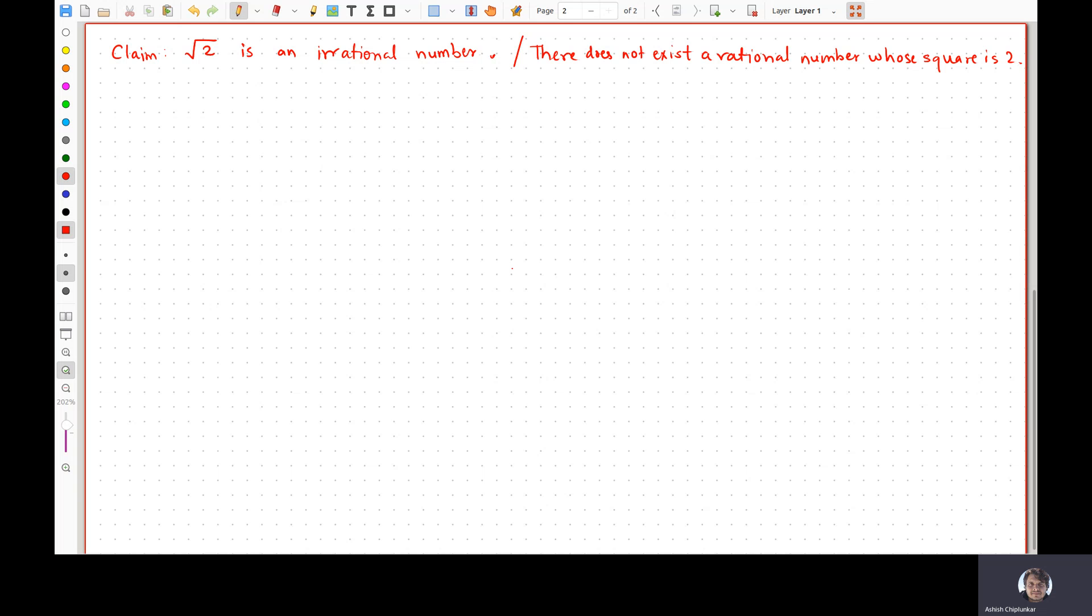I am pretty sure you might have seen this proof earlier, let's say in the 9th or 10th class maybe or maybe even earlier than that. Let us quickly recap that proof. So how do you go about proving this? You want to prove that there does not exist a rational number whose square is 2, you assume the opposite of that, right.